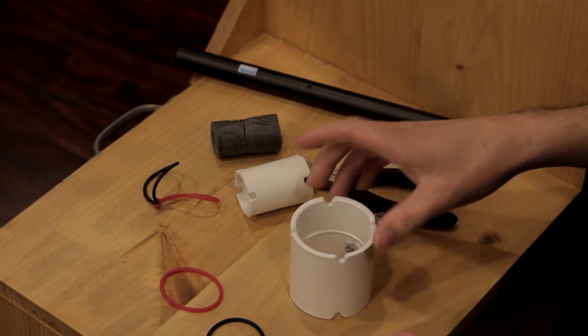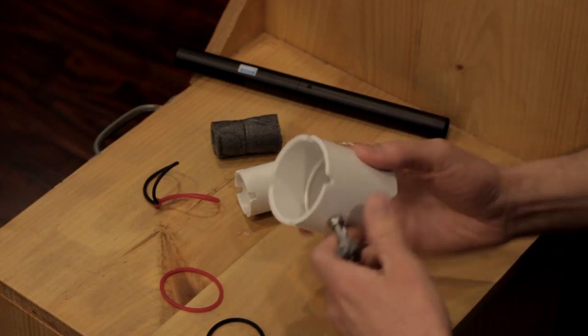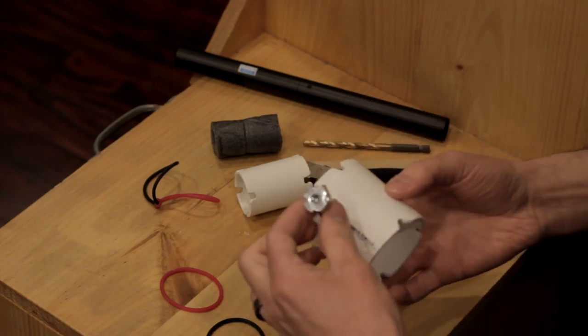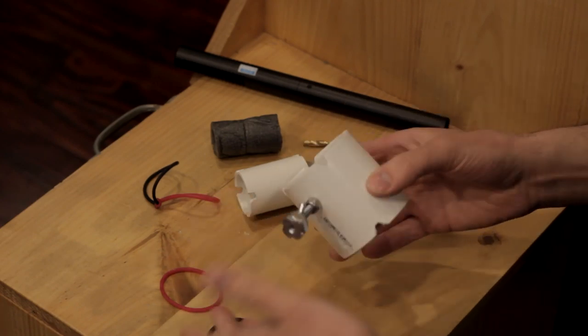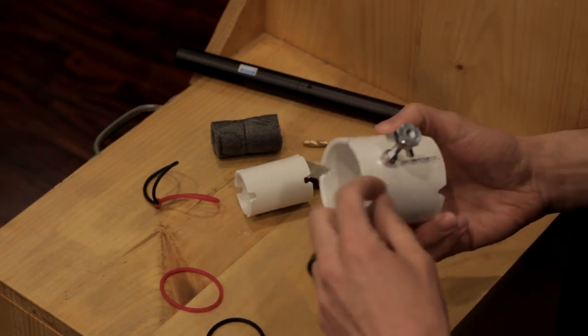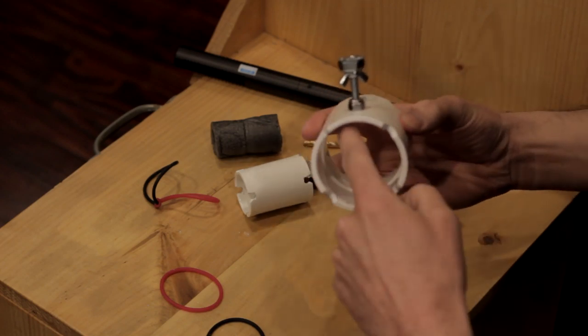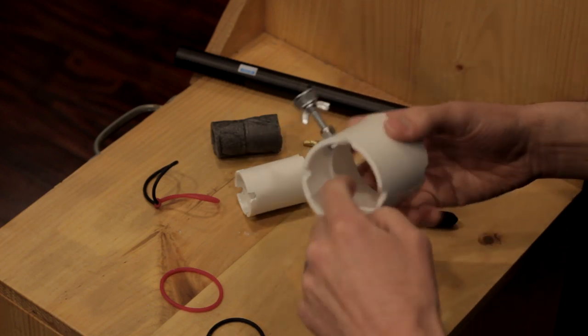All righty, so essentially what we got here is our two inch coupler. Right here is the mount, but this is not technically part of the build - you'll see it in the other video. I basically drilled a hole slightly offset so it didn't go through the center ring and the bolt would sit flat on the surface in here.